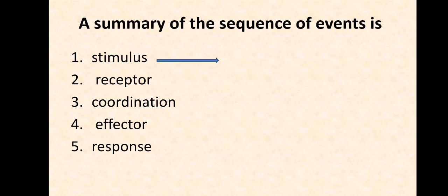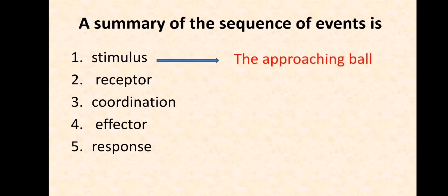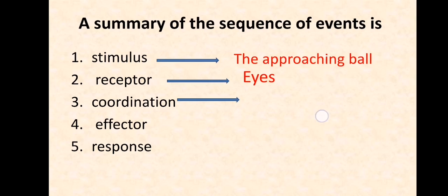In the first example, when you are walking along and you see a football coming at high speed toward your head, the stimulus was the approaching ball. The receptor — which organ detects the ball? Of course, your eyes. The coordination is the central nervous system, which we'll talk about in the next video.